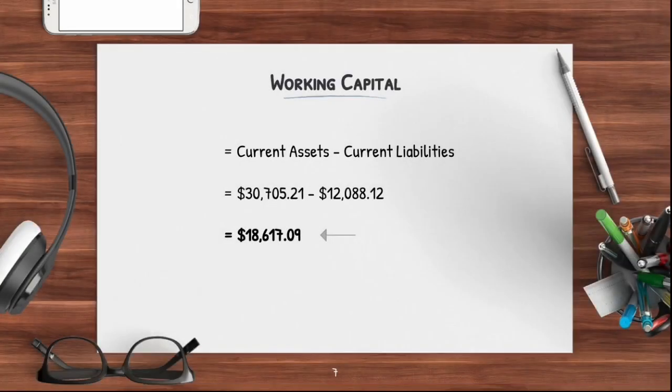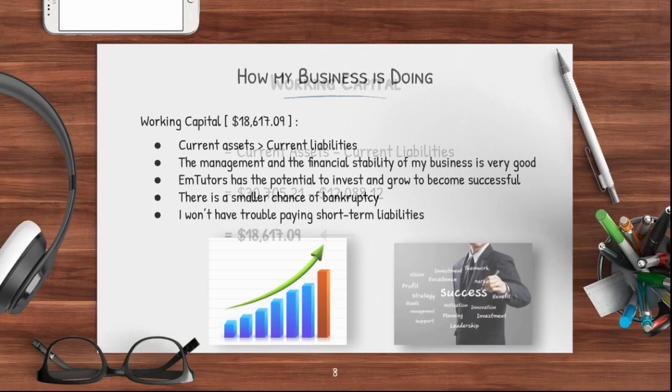For my working capital, I subtracted my current assets by my current liabilities to get an amount of $18,617.09. Since my current assets exceed my current liabilities, the efficiency of operating as well as the financial stability of my business is very good. The working capital is higher than zero, so it has the potential to invest and grow to become successful. There is a smaller chance that I can go bankrupt or have trouble paying back creditors.